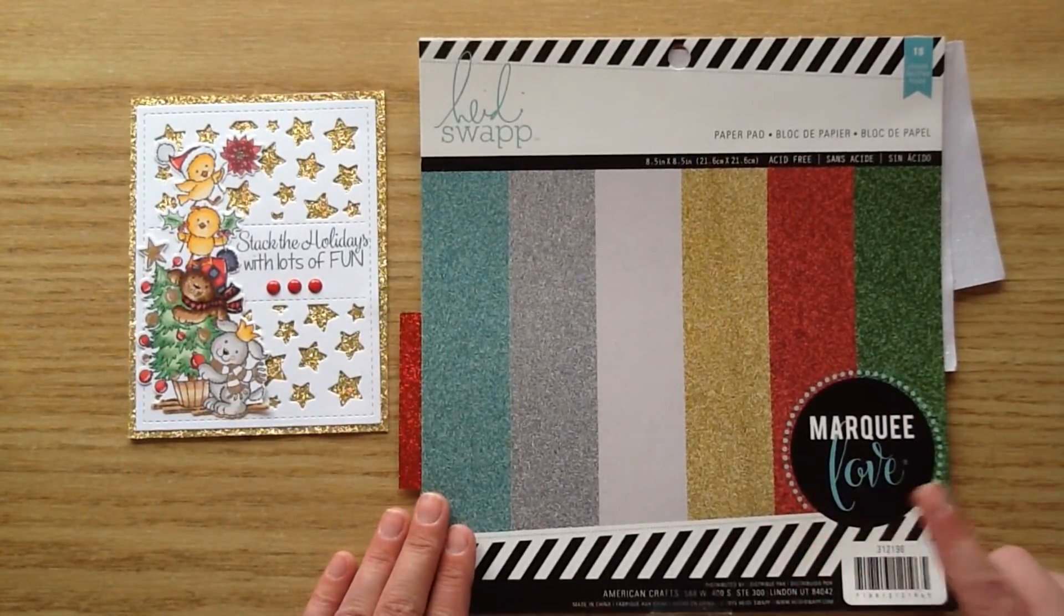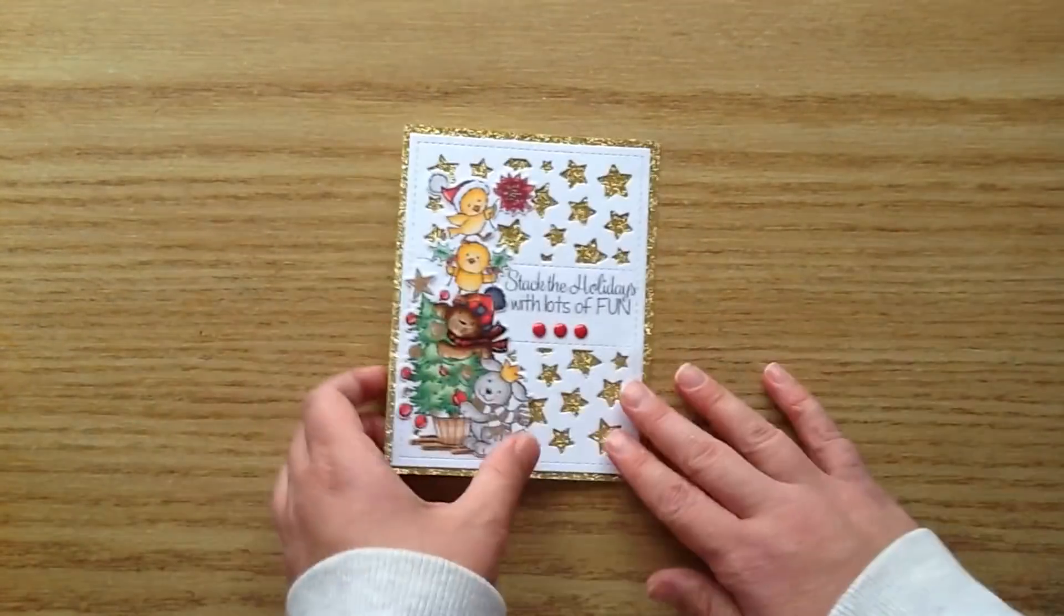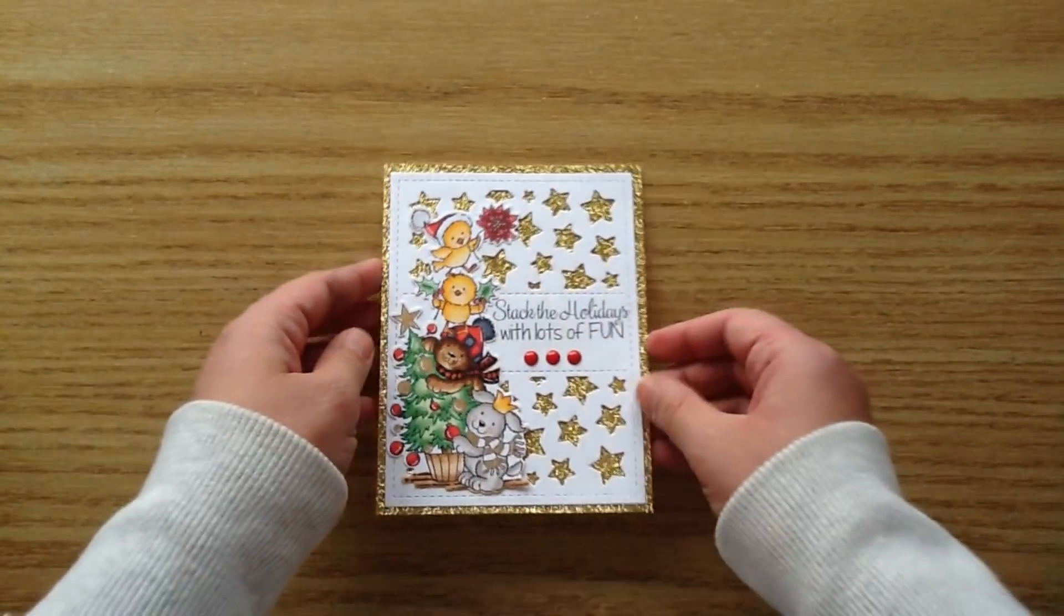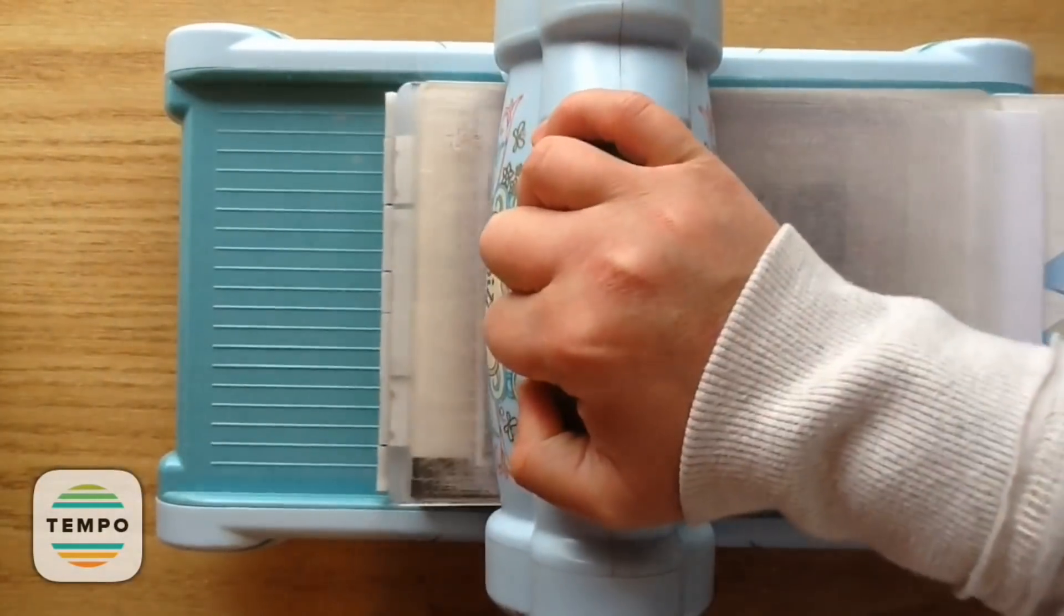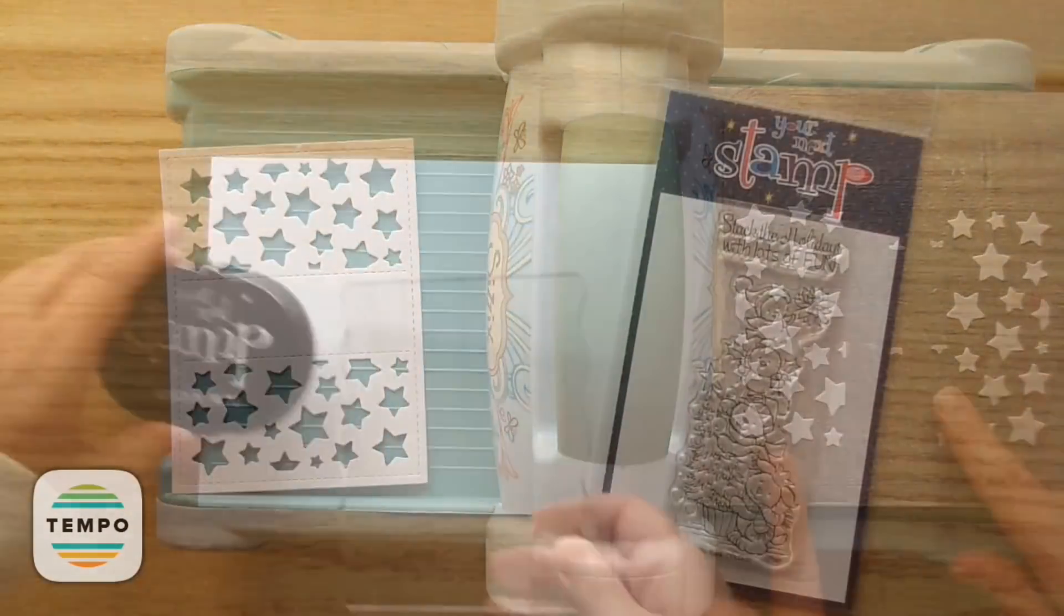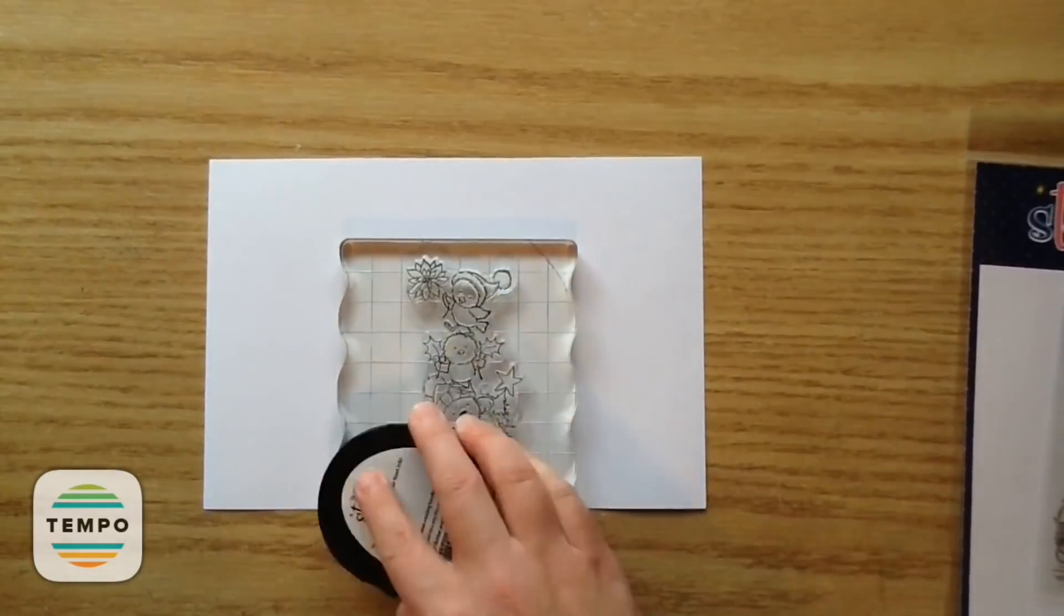And then I used this Heidi Swapp glittery marquee love paper. I purchased this from Michael's and that's where I used the glittery gold paper from. So I'm just going to hold it up and get right into the process video. So to begin with, I'm going to take a white piece of cardstock and trim out this star panel. And I can totally save all those little pieces of stars for confetti. They're so cute or for like little accents on my card.